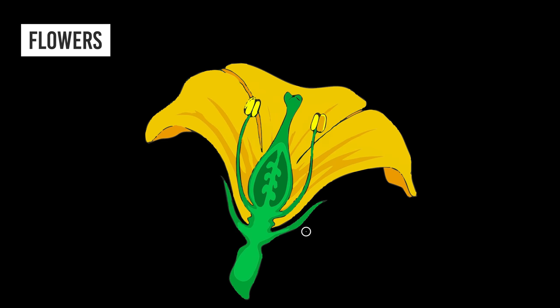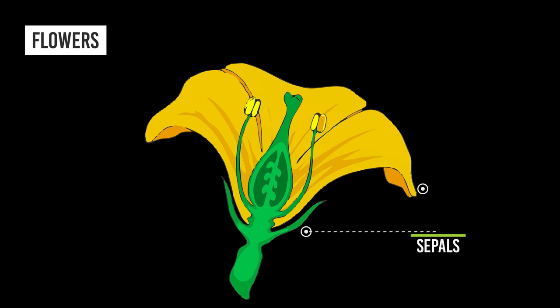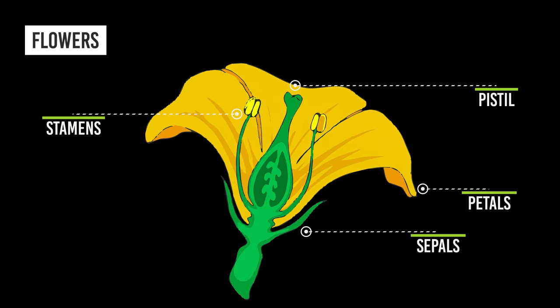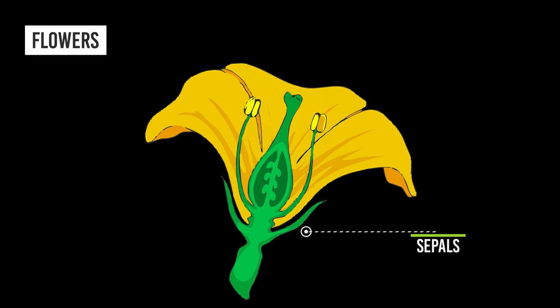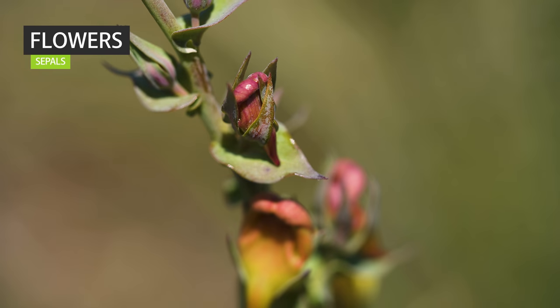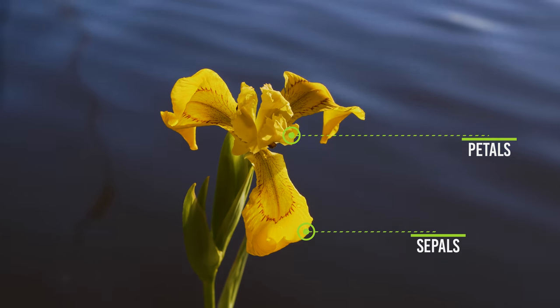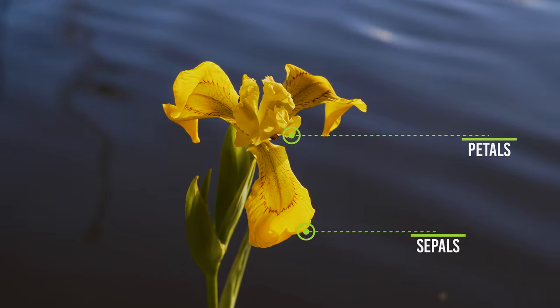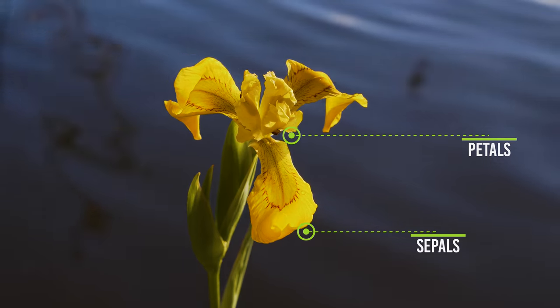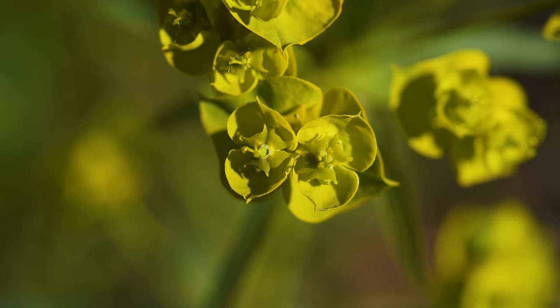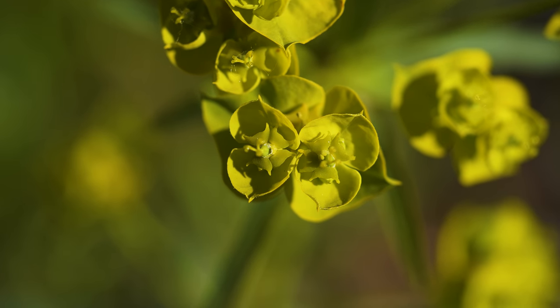A typical flower has four main parts: sepals, petals, stamens, and a pistil. Sepals are the outer parts of the flower that protect the interior flower while it emerges. Sepals are typically green and leaf-like because they're modified leaves, but they can be any color depending on the type of plant. Some sepals are even more showy than petals. Not all flowers have sepals, and in some cases the sepals are modified into bracts that surround the flower.